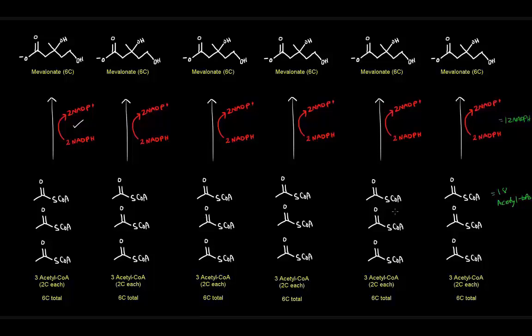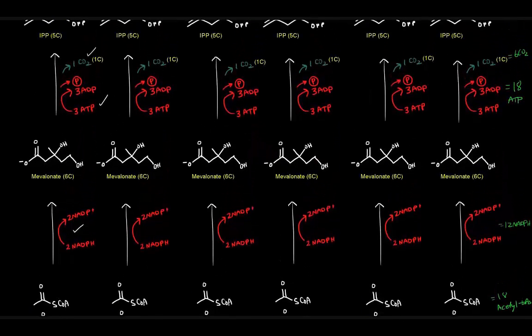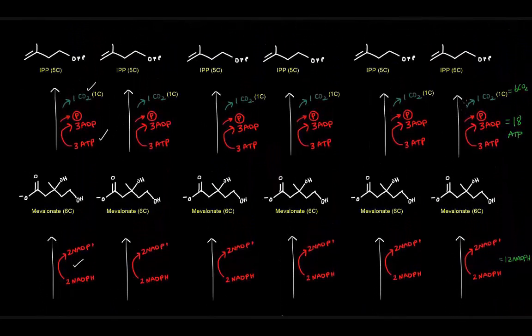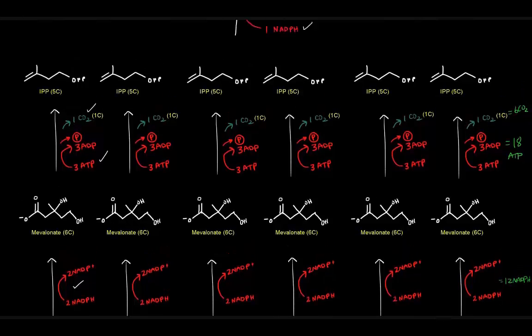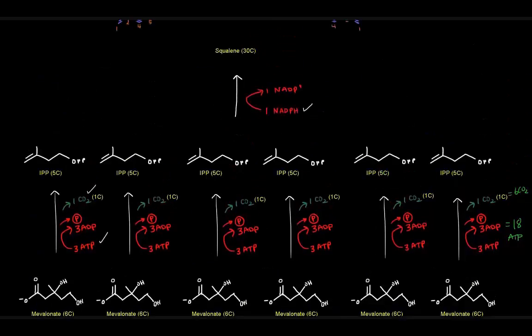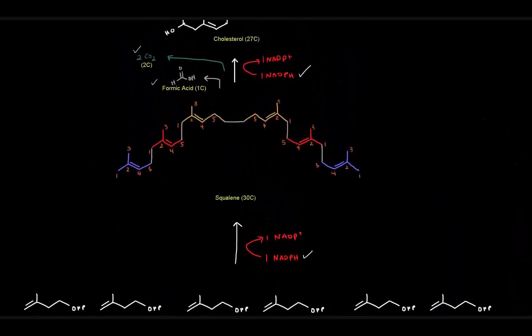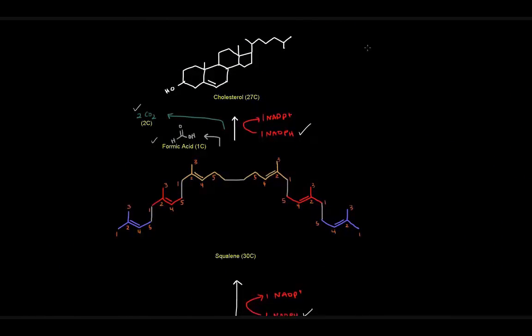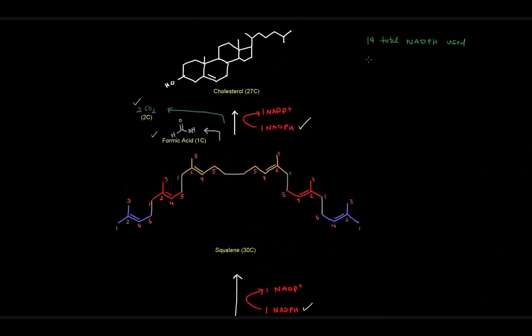So we have 18 acetyl-CoAs. We get six mevalonates out of those by using 12 NADPHs. Those six mevalonates are each converted to IPP, losing one carbon dioxide each time and using 18 ATP molecules to get there. And then we use another NADPH here. So if we consider to start counting these 12, that would be 13 right there to make the squalene and 14 there to make the cholesterol. So we used 14 total NADPHs used. We said 18 ATPs, 18 total ATP molecules used.